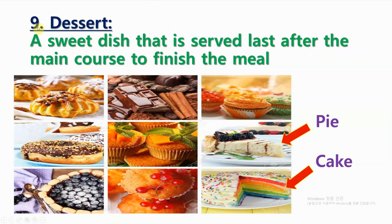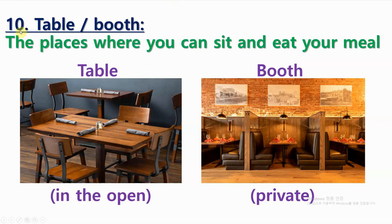Number 9: Dessert. A sweet dish that is served last, after the main course, to finish the meal. Number 10: Table, or booth. The places where you can sit and eat your meal.